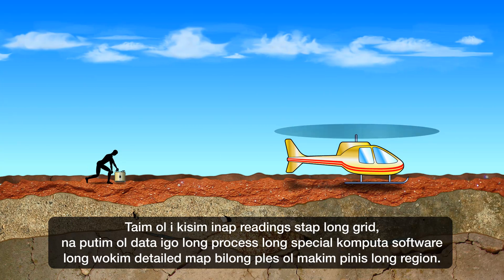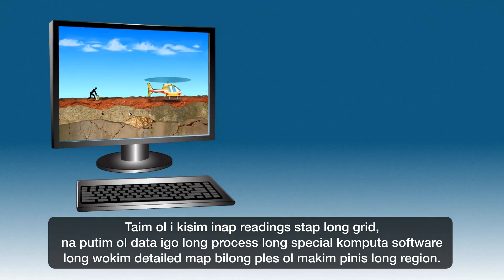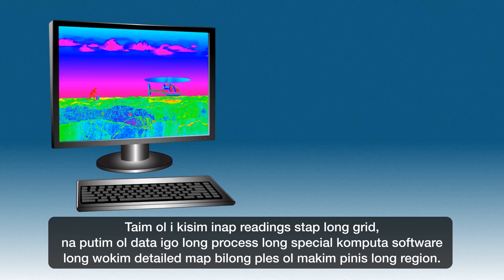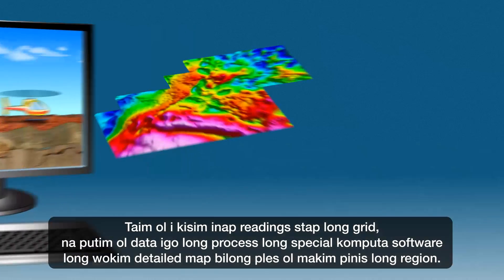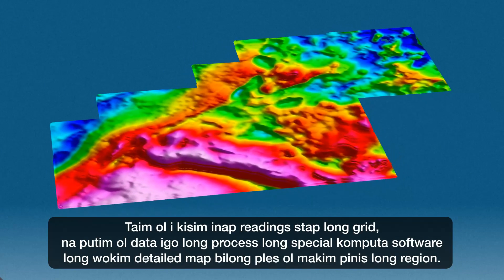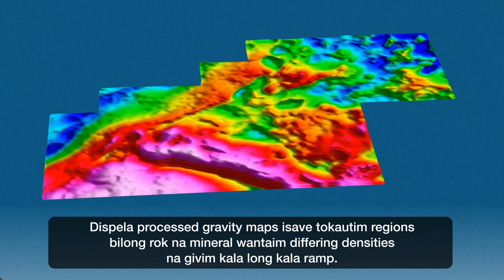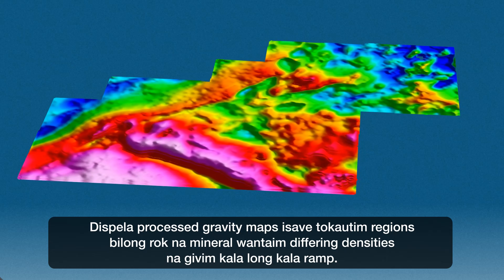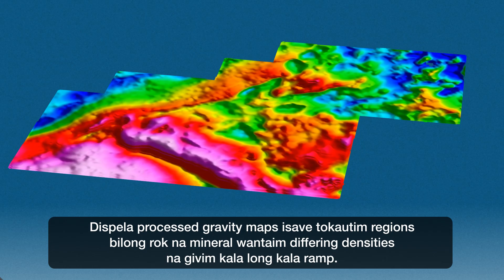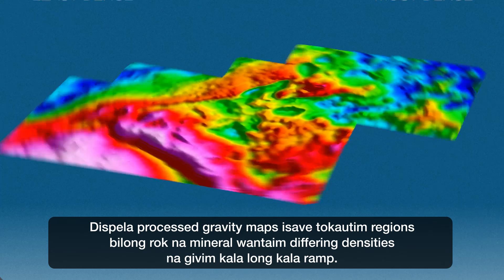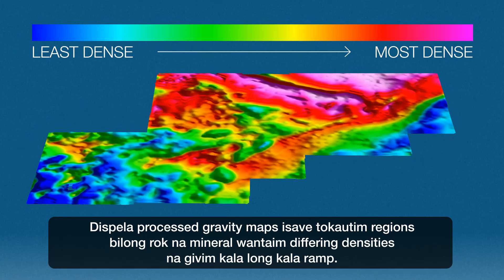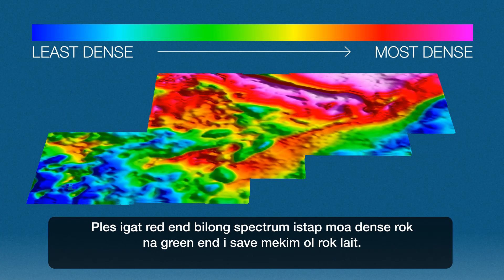Once there are enough readings recorded from the grid, the data is processed by special computer software to create a detailed map of the surveyed region. The processed gravity maps define regions of rocks and minerals with differing densities by assigning colours along a colour ramp, where the red end of the spectrum indicates more dense rocks and the green end indicates lighter rocks.